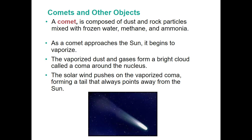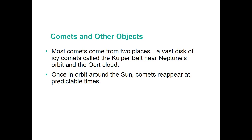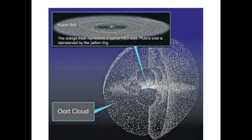A comet is composed of rocks, dust particles, and frozen water. As it approaches the sun, it begins to vaporize, creating a bright cloud called a coma around the nucleus that forms the comet's tail. As it moves back away from the sun, the material refreezes, and this cycle continues. Most comets originate from the Kuiper Belt near Neptune's orbit. Once in orbit around the sun, they reappear at predictable times — like Halley's Comet, which returns within a human lifetime.